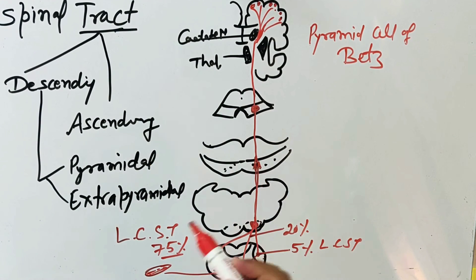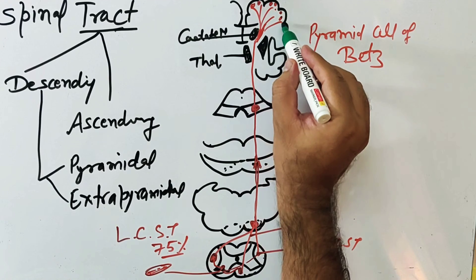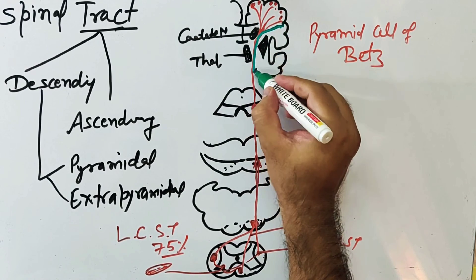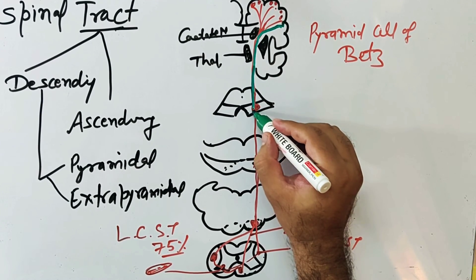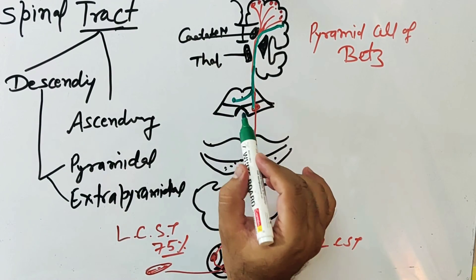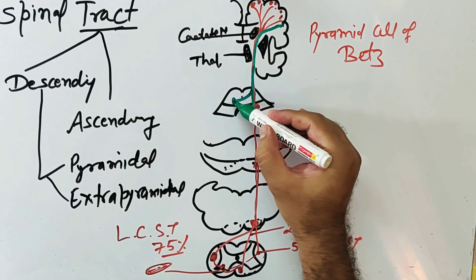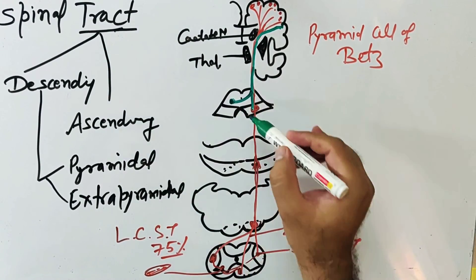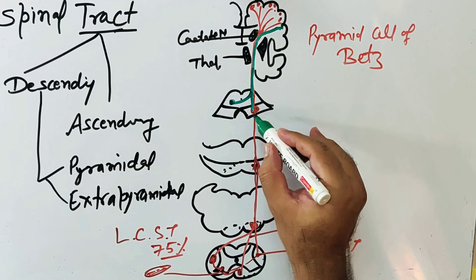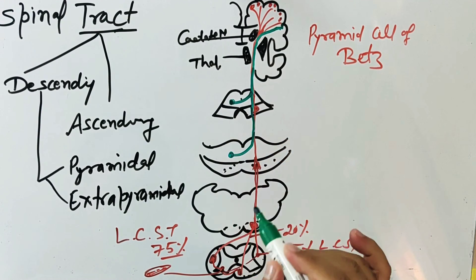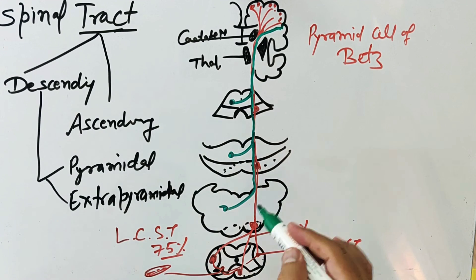Clinically, the pyramidal tract also contains corticonuclear fibers, also known as corticobulbar fibers. These corticonuclear fibers pass through the genu and through the medial part of the crus cerebri, and cross to the opposite side. The corticonuclear fibers supply the cranial nerve nuclei, and most fibers cross to the opposite side.